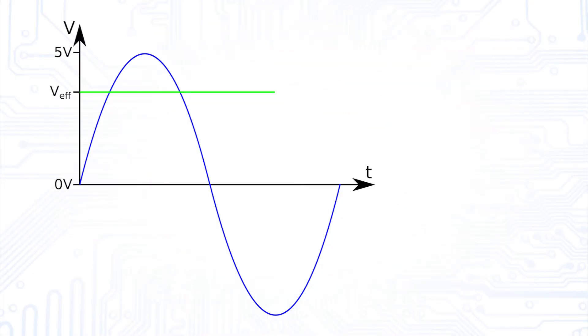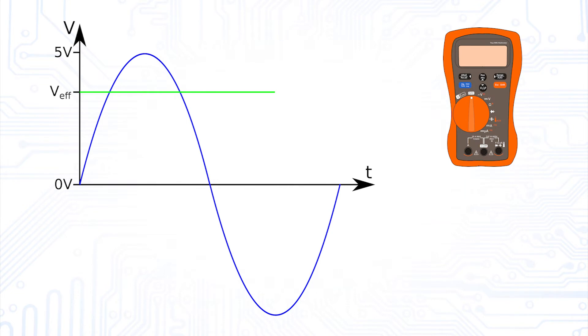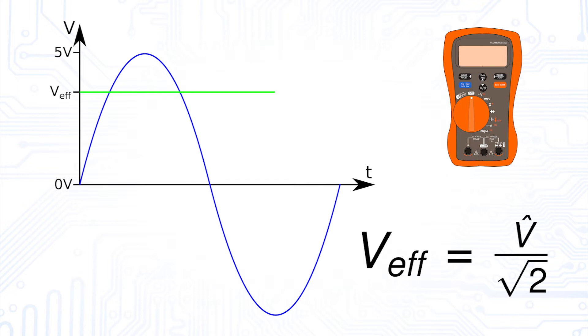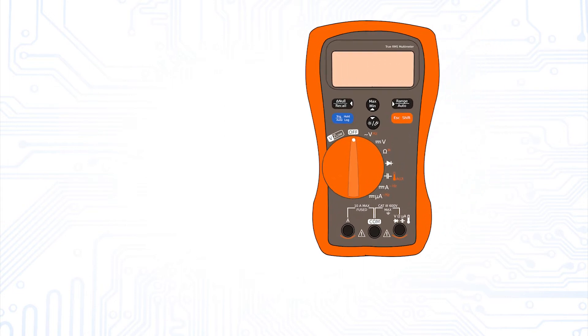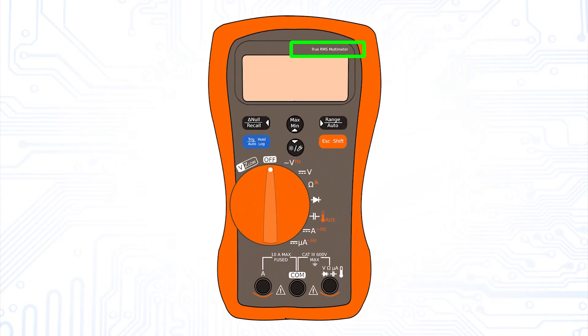Before we go to some basic measurement examples, there is one last thing you need to know about measuring AC quantities. When these quantities are measured with a multimeter, in most cases not their peak but their effective or RMS value is displayed. In this context, a difference is made between the cheap RMS and the more expensive true RMS multimeters. Multimeters with the imprint TRMS or true RMS can correctly measure any AC quantity regardless of its shape, because they use advanced circuitry to determine the effective value.